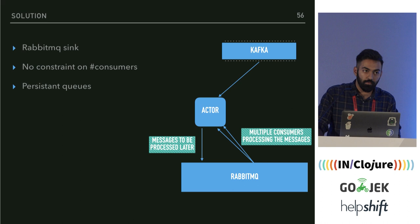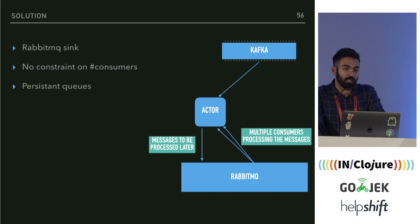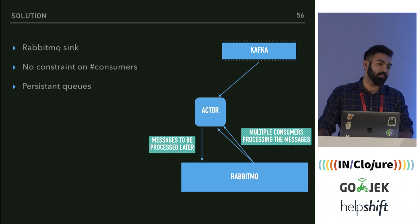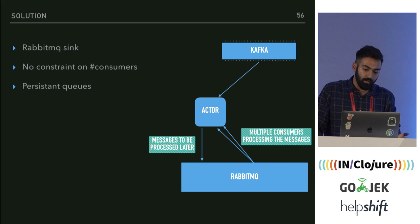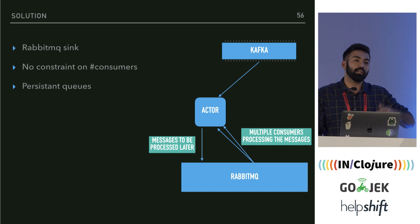If you have four partitions and add a fifth consumer, that fifth consumer would stay idle. So we couldn't increase the number of consumers. Instead, we started syncing all the messages into RabbitMQ. Since RabbitMQ has no constraint on the number of consumers, you can easily scale up — we set up 15 to 20 consumers on RabbitMQ and process the messages in parallel.